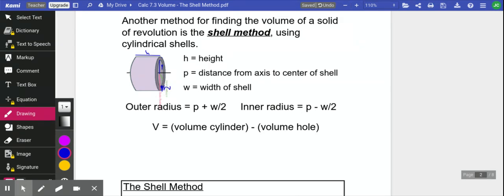When we want to find the outer radius, remember this P value only goes to the middle of that shell. So our outer radius is P plus W over 2, so half of the width of that shell. And then the inner radius is P minus W over 2. If we want to find the volume of the cylinder, we have to find the volume of the cylinder and then subtract the volume of that hole.